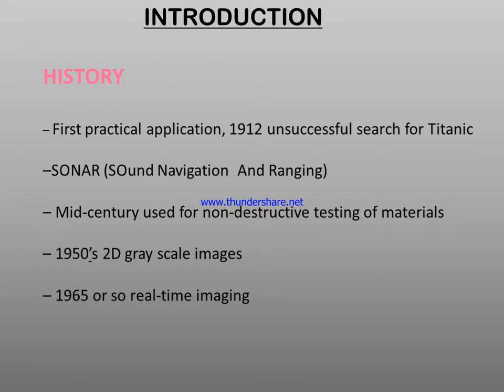Introduction about the history of ultrasound. First practical applications were given in 1920, which were unsuccessful, such as the search for the Titanic. Sonar is used for sound navigation and ranging. In mid-century, ultrasound was used for non-destructive testing of materials. In the 1950s, 2D scale images were produced, and in 1965 real-time imaging was introduced.